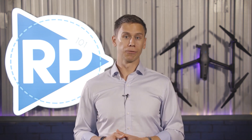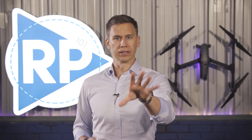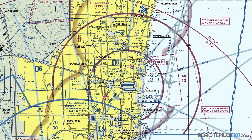The busier the airspace, the more chatter you're going to hear on the radio. So let's look down at the Fort Lauderdale area. Did you know there's actually three airports with Fort Lauderdale in the name? There's the Fort Lauderdale Executive Airport, the Fort Lauderdale Hollywood International Airport, and if you look here on the sectional chart, there's actually a heliport on top of a building. So make sure you know the proper name of the airport as it appears on the chart — that's what you're going to use when you make your position report. You don't want to transmit 'one mile east of Fort Lauderdale airport at 300 feet.'